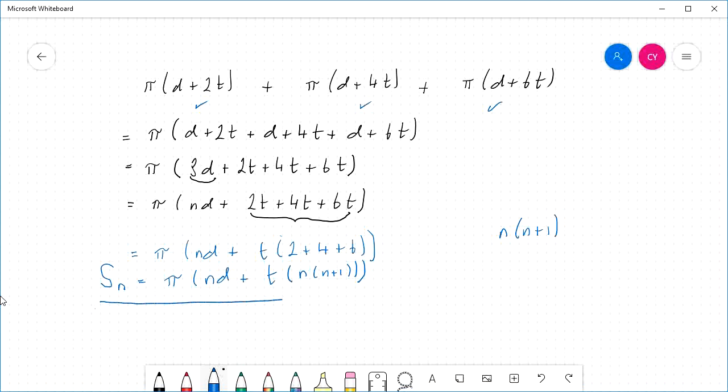And so now, if I want to find the sum to 25 layers, all I've got to do is put 25 into that formula instead of n. Always assuming, of course, I know what d and t are. Let's go and have a look at what that looks like in a practical example.